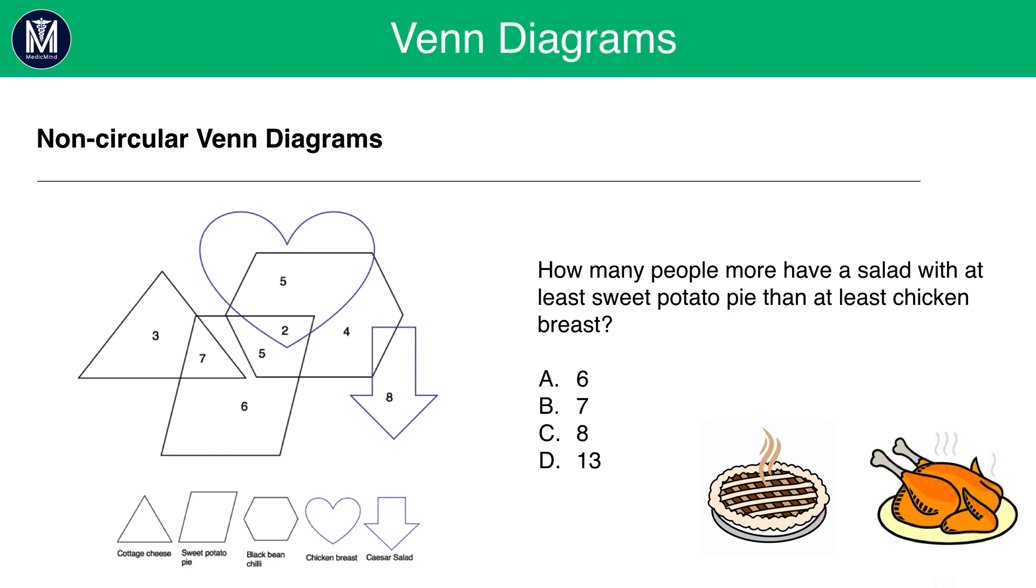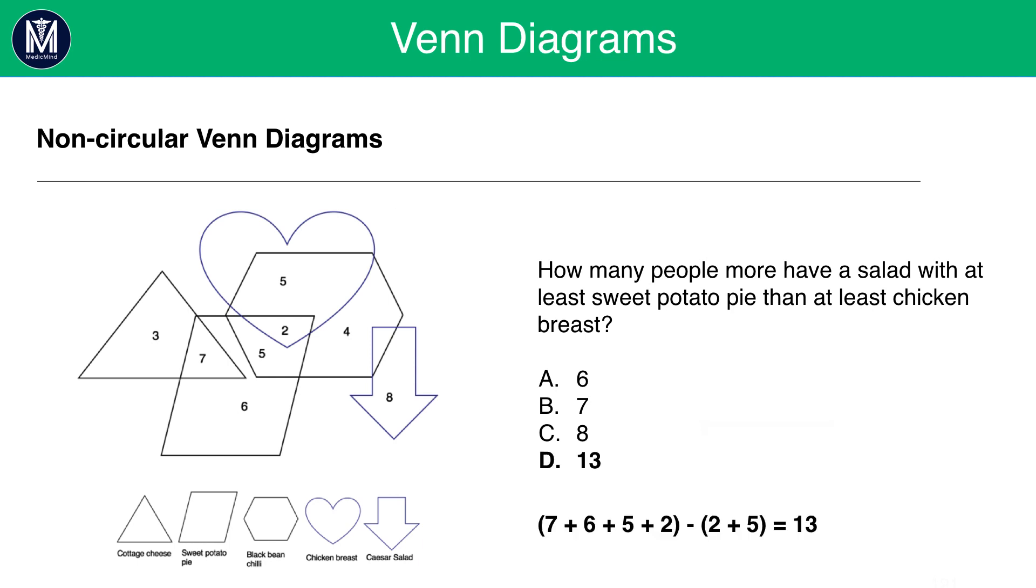This is a good example here. How many people will have a salad with at least sweet potato pie than at least chicken breast? So, straight away, what you should be looking at is what shape is being represented by sweet potato pie. I can see that the rhombus is being represented by sweet potato pie, so what you need to do is add up all the numbers within the rhombus. So, that's 6 plus 7 plus 5 plus 2. And you need to find the difference between that and chicken breast. Chicken breast is a love heart, which adds up to 5 plus 2. And that should give you 13. This is one of the most basic questions you'll get in the exam, but you shouldn't worry because the non-circular Venn diagram questions aren't that different to normal circular Venn diagram questions, so as long as you understand the principles that we have talked about just now, you'll be completely fine and have no hassle in answering the questions.